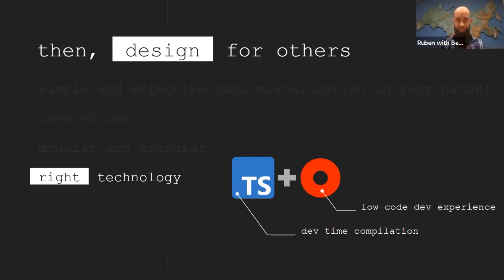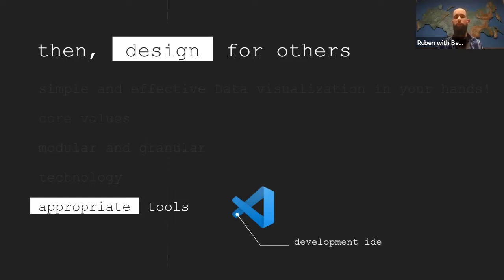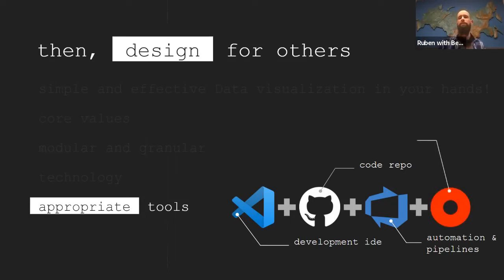By choosing the right technologies for what you are aiming to achieve, you should also choose the appropriate tools. In our case, that meant using Visual Studio Code as our development IDE, obviously using GitHub as our code repository, then using Azure DevOps for automation and pipelines, as we are going to see in a moment. And of course, the OutSystems platform is the ultimate tool for developers to use our own framework that we are creating.